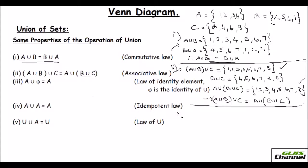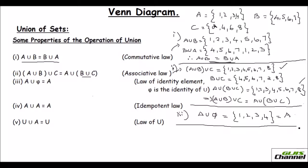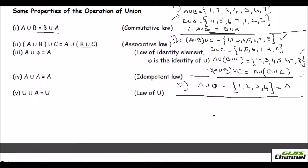For the third law, A union empty set: write A = {1, 2, 3, 4} and union with the empty set, which has no elements at all, so the result is A only. For the fourth law, A union A: write A and then include A again — everything is already written, so nothing more to add. A union A is simply A. That is the idempotent law, also proved.